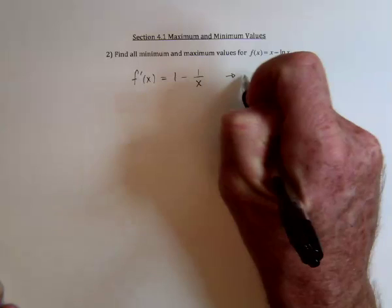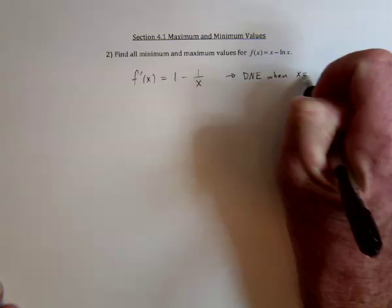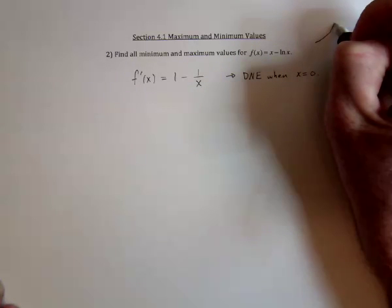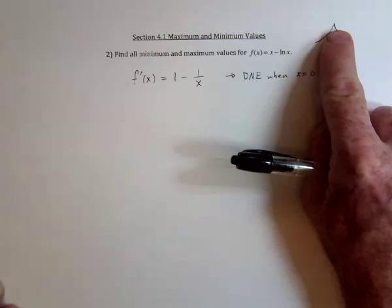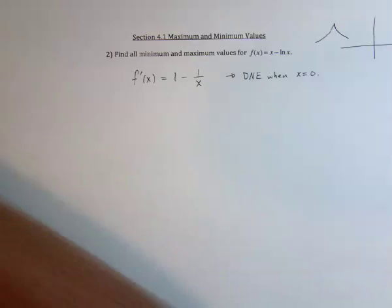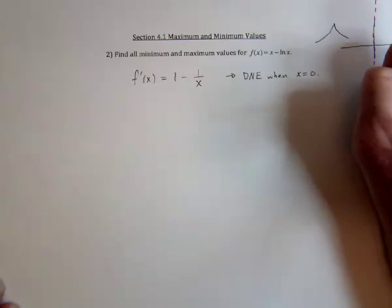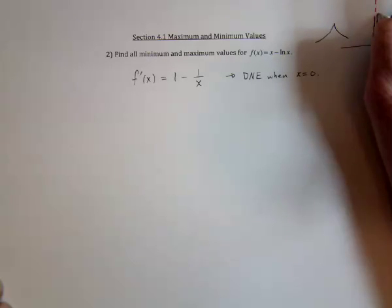Notice that this does not exist when x equals 0. In general, that's something you always need to watch out for. Where does the function not exist? Because it could be that you've got something like this, so the derivative does not exist there, and yet that would be a maximum value. For us, the x equals 0, as I was just explaining, is actually an asymptote, so that's some place where the derivative does not exist, yet that's not going to be a minimum or a maximum because the function keeps going up forever.